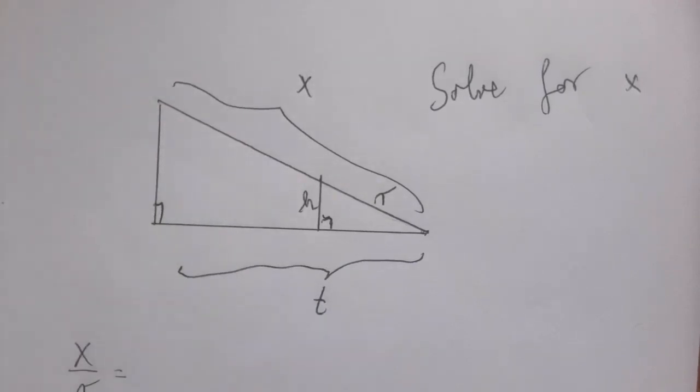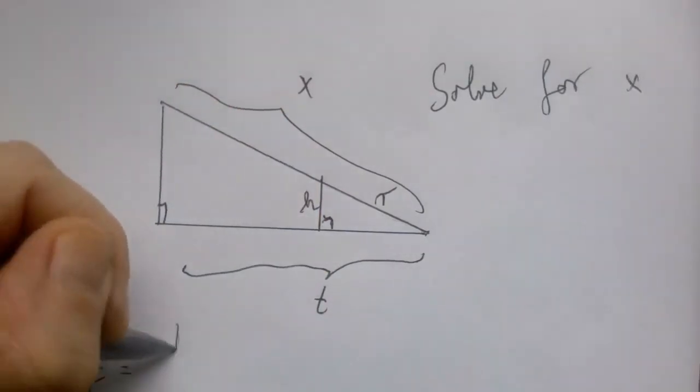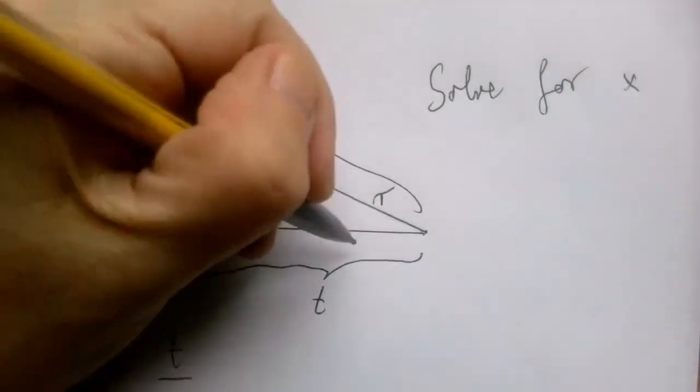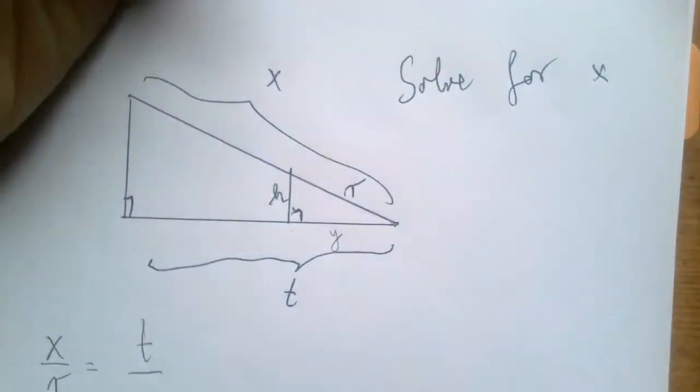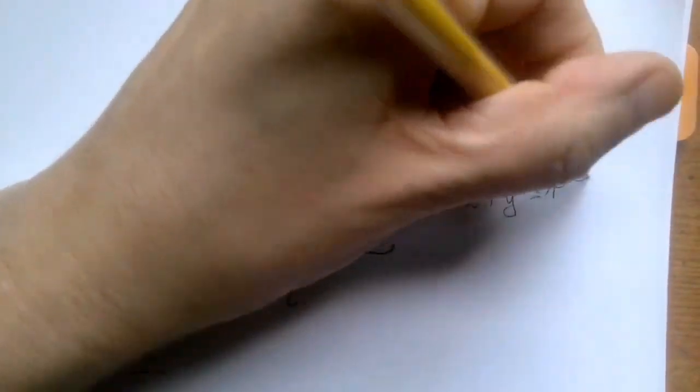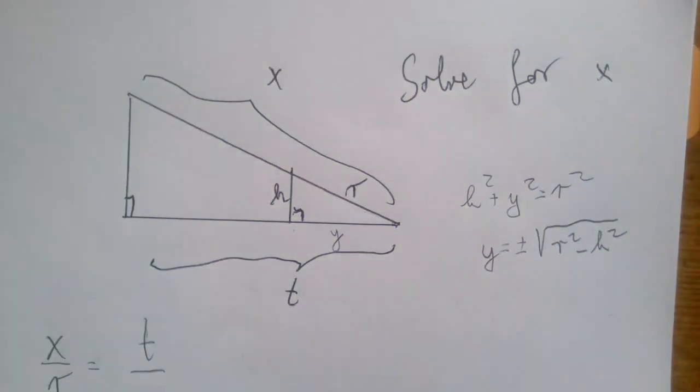But we can solve for either one in terms of the rest of the variables just via the Pythagorean theorem. So if we say this was the hypotenuse in the big one divided by the hypotenuse in the small one, let's go horizontal. So the horizontal in the big one is T, and the horizontal in the small one, well, let's just for a split second call it Y. And then the Pythagorean theorem stated to this triangle is H squared plus Y squared equals R squared, which gives us that Y is R squared minus H squared.